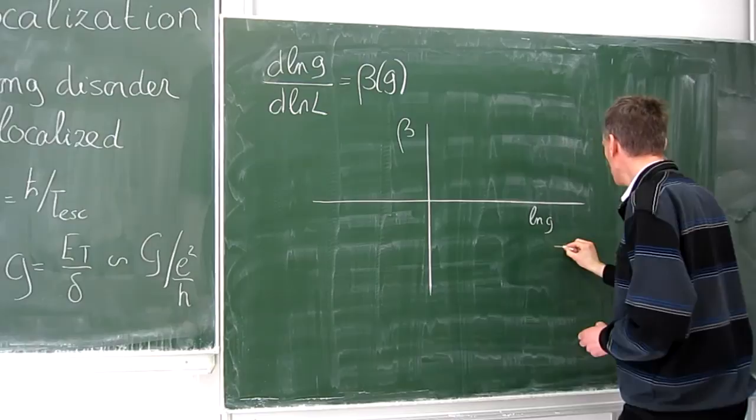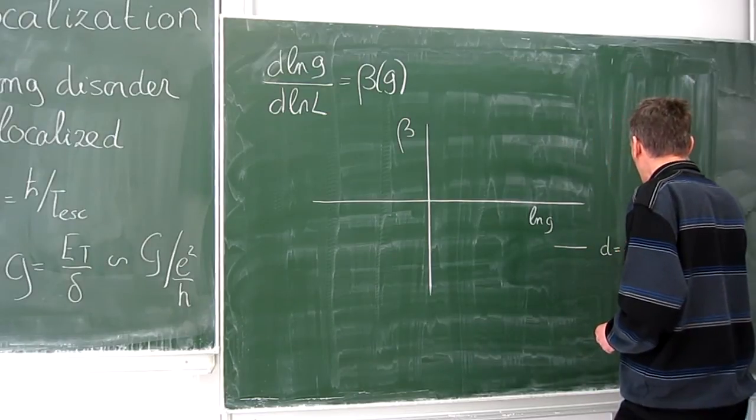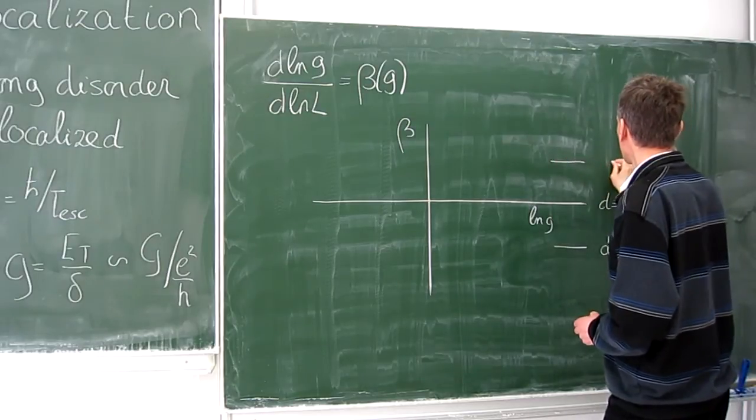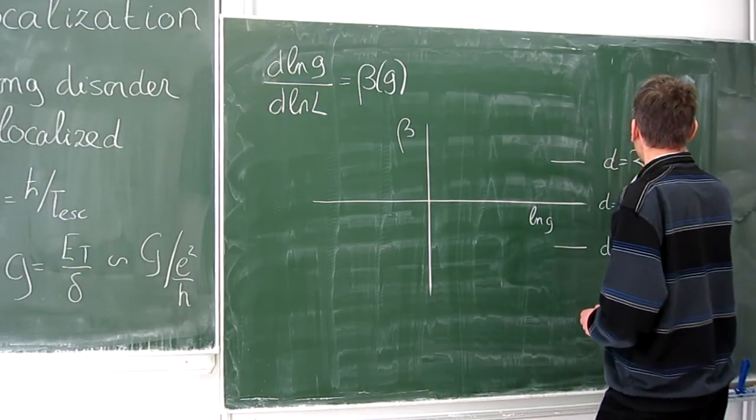So it's minus 1 for d is 1, 0 for d is 2, and it's 1 for d is 3.